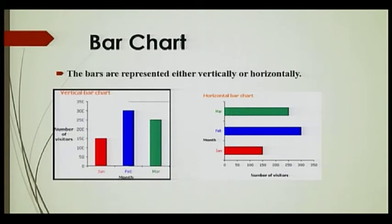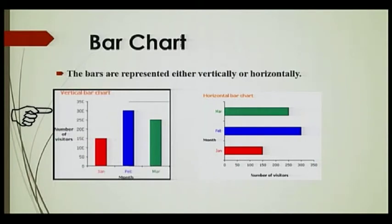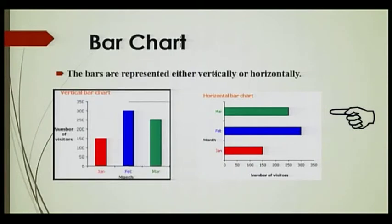A bar chart can be a horizontal bar chart or a vertical bar chart, because the bars can be represented either vertically or horizontally. Here, the bars are vertical and this is a vertical bar chart, also known as a column bar chart. Here, you can see the bars are drawn horizontally, so this is a horizontal bar chart, also known as a row bar chart. Let us consider an example.